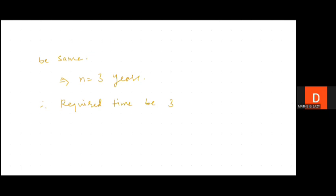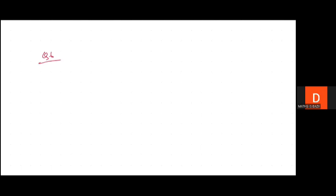Compound interest is an interesting chapter and it is useful in practical life also, but we have to be careful about the calculations. Now coming to Question number 6: at what rate percent per annum of compound interest will 2,000 amount to rupees 2,508.80 in 2 years?